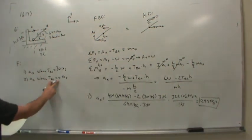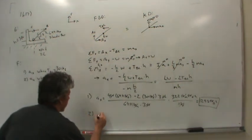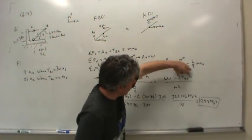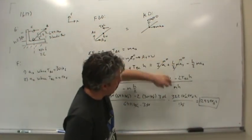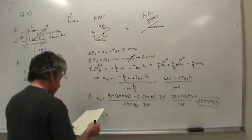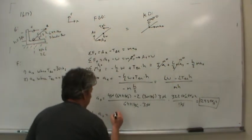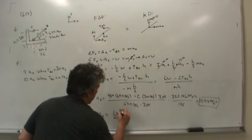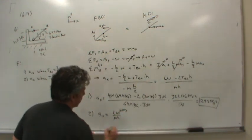But what about when the tension in the cable is 0 for question 2? Well, in that case, this whole piece is gone, and we just have LW over MH. Let's write that LW over MH. Notice that W is just MG, so we can cancel that, and this becomes LG over H.